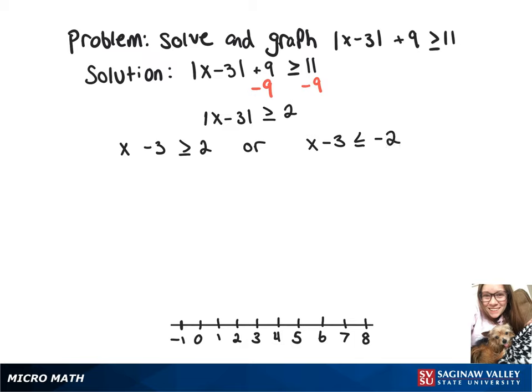Now going to the one on the left, we're going to add 3 to both sides, giving us x is greater than or equal to 5.